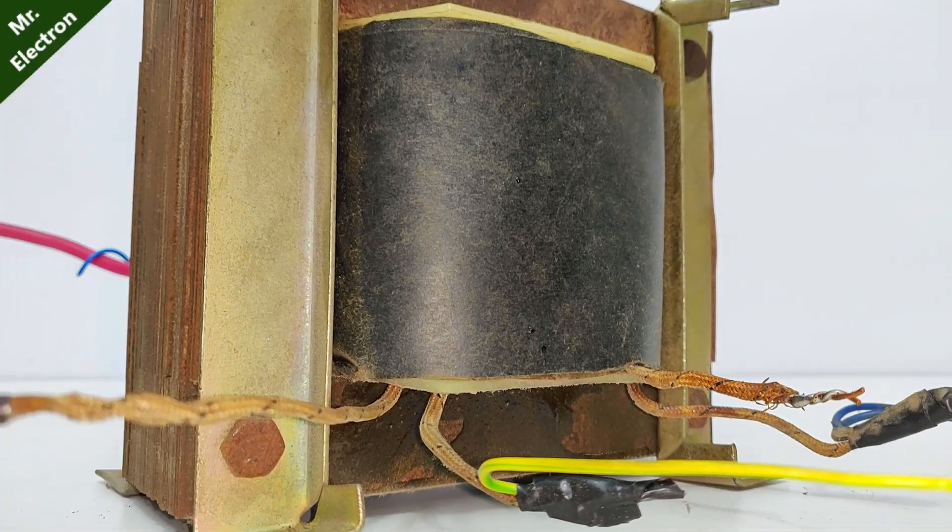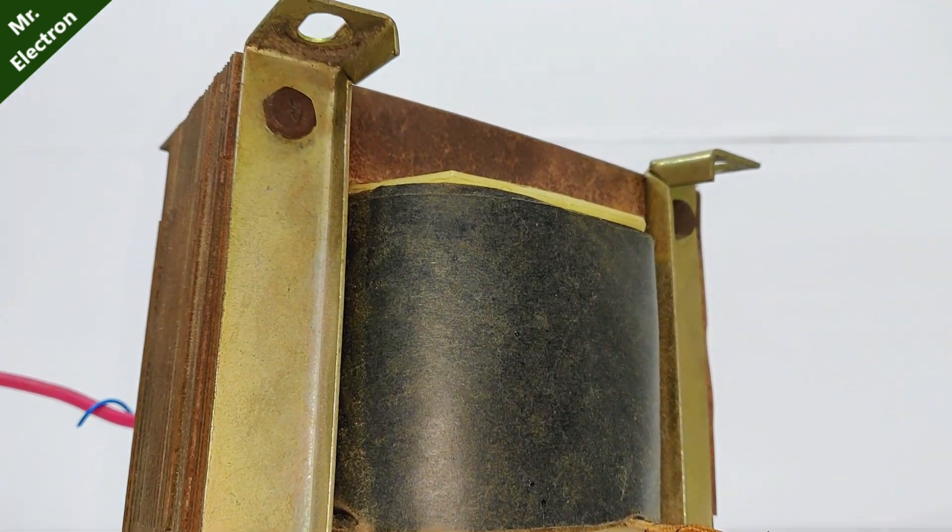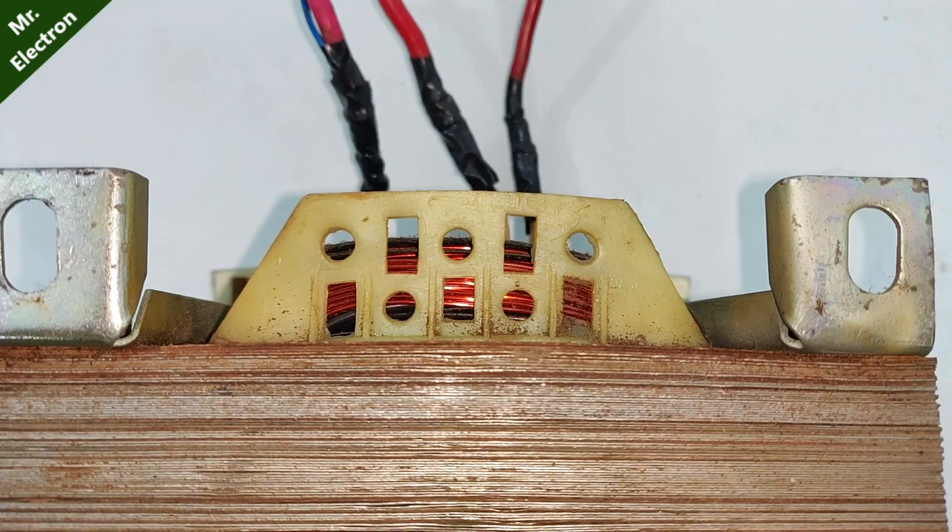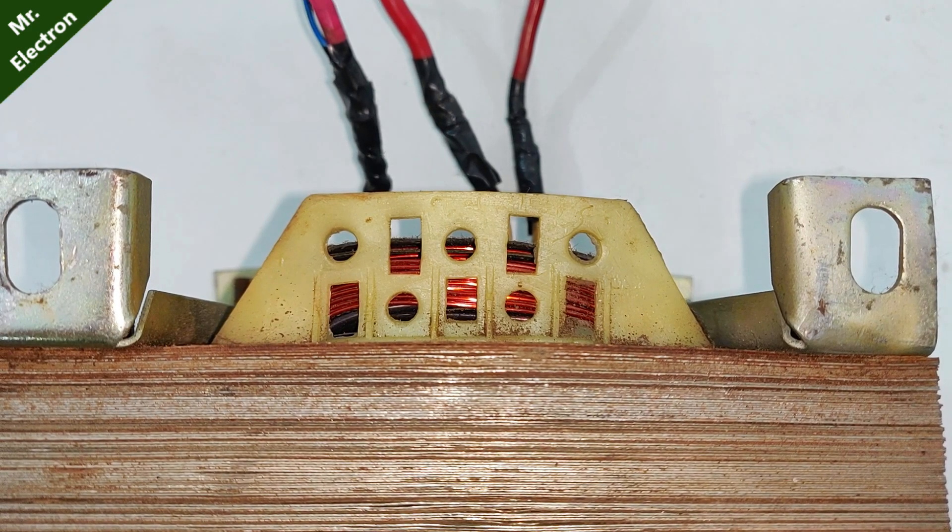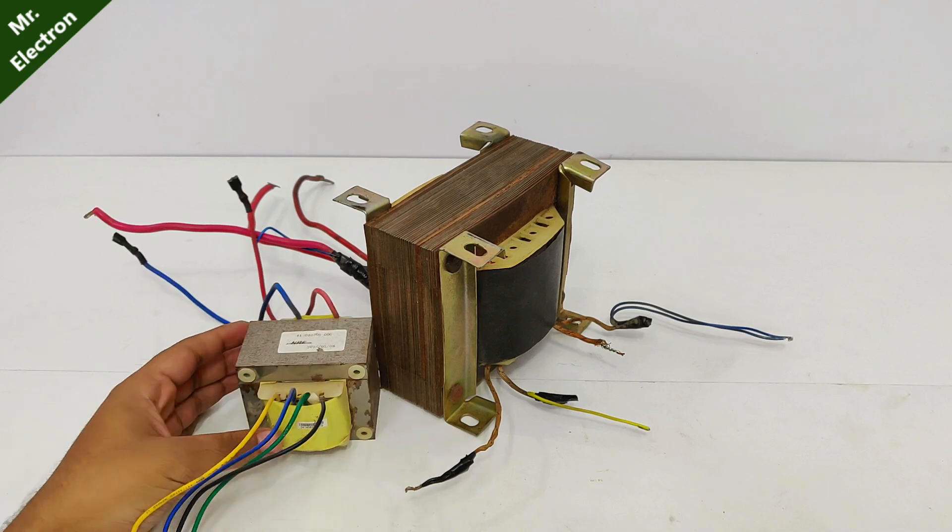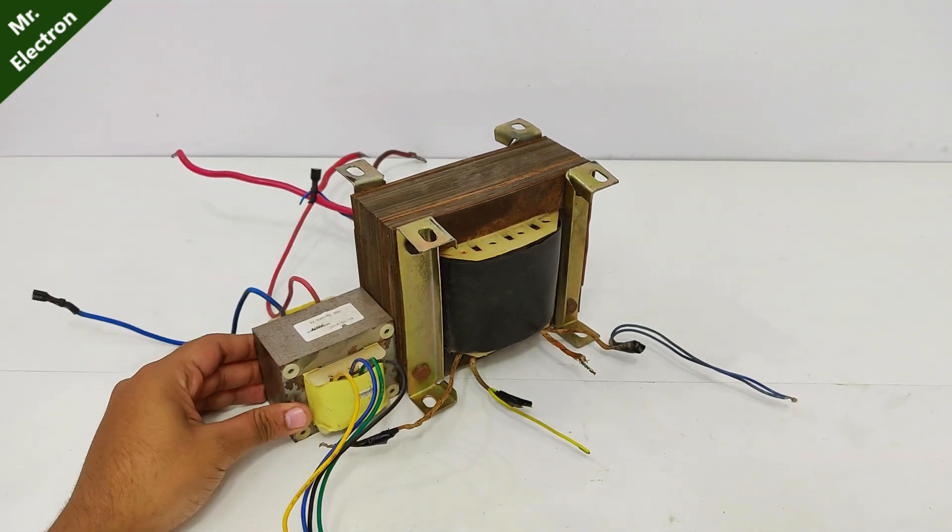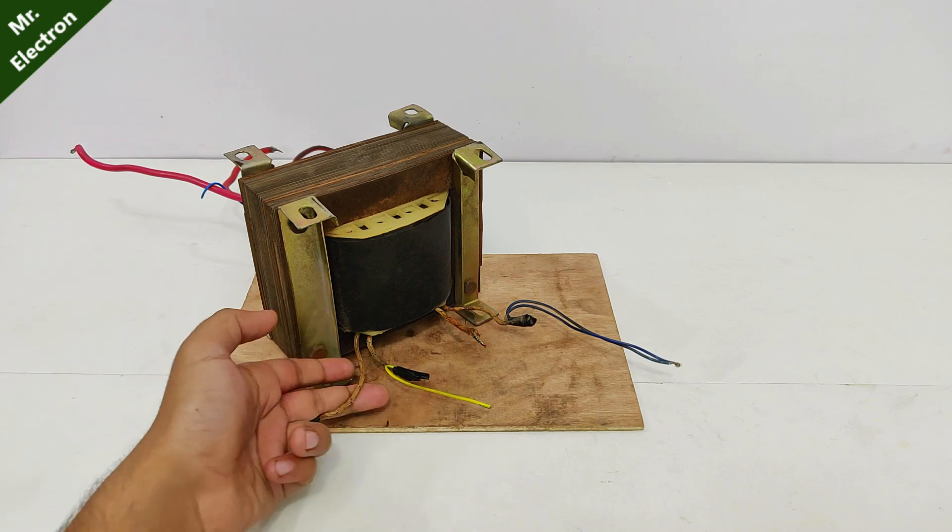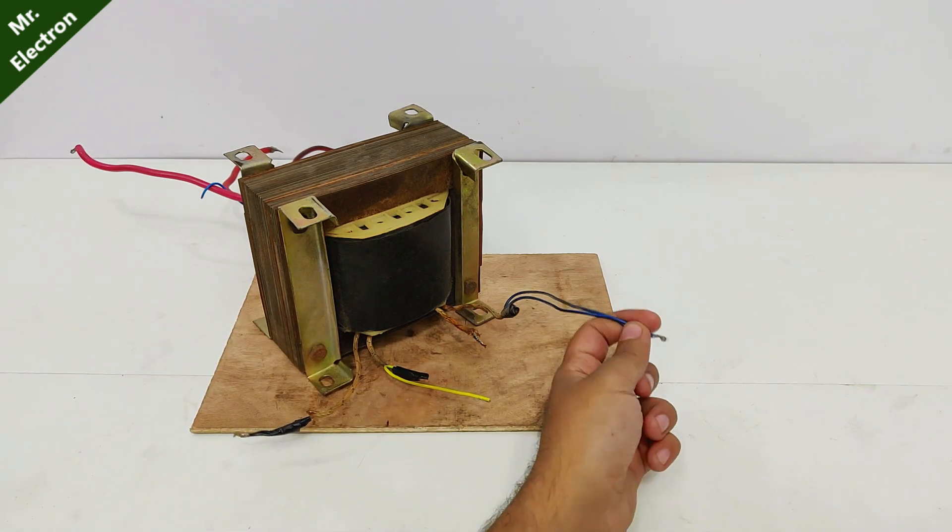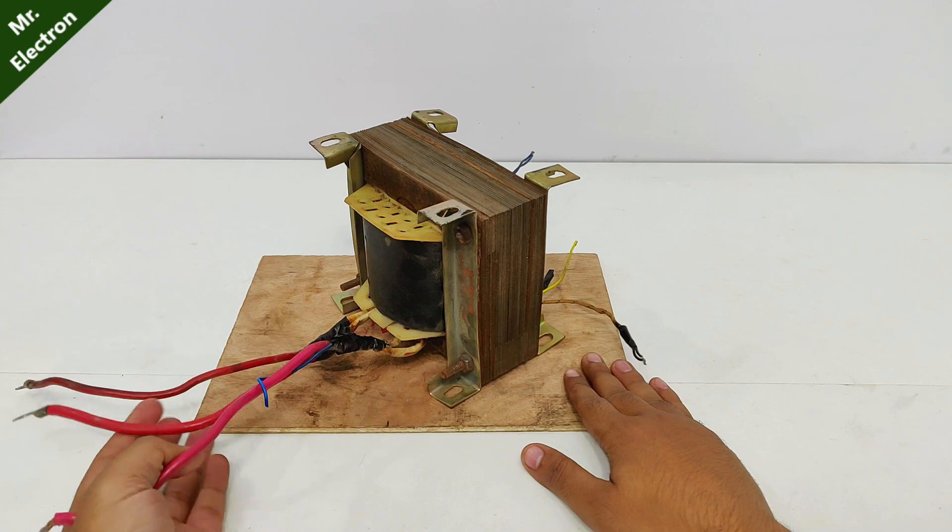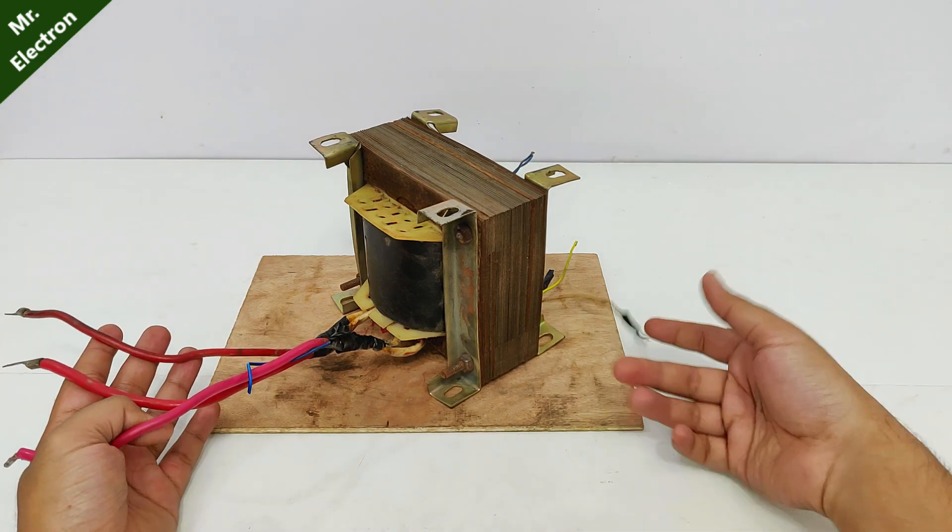So guys, here as you can see that finally I have managed to salvage this huge transformer from the inverter. As you can see, it is really big and for comparison, I'm going to use this small UPS transformer and you can see how small this piece is when compared to the inverter transformer. Now, these four wires that you see, these are quite thin and if we move on to the other side, you see these wires, these are really thick when compared to the other side.